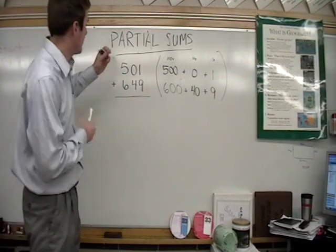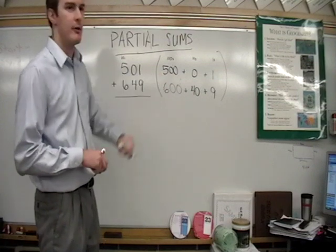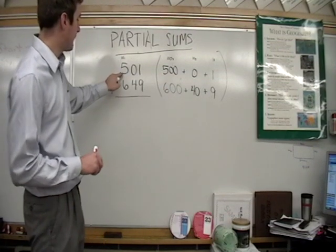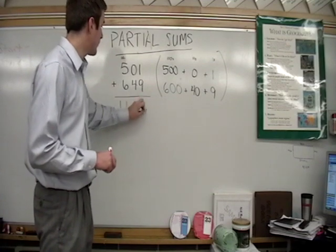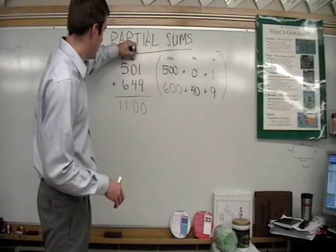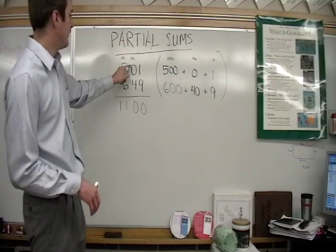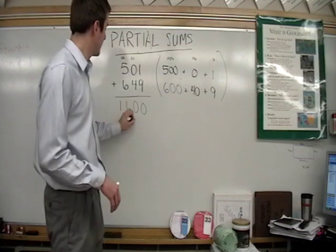First we're going to add the hundreds. Now you see that the hundreds are already separated right out here. So we're just going to think 500 plus 600 is 1100. Then we're going to move to the next part, the tens. We have zero tens plus four tens gives us 40.